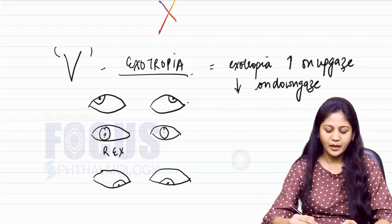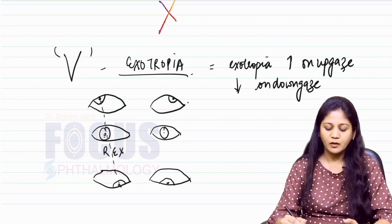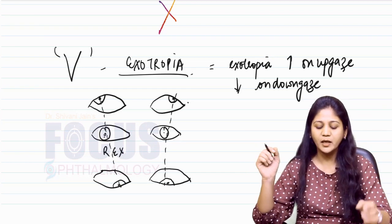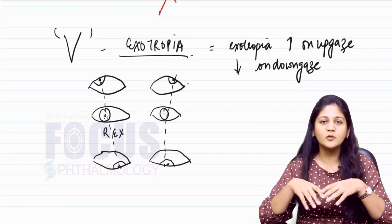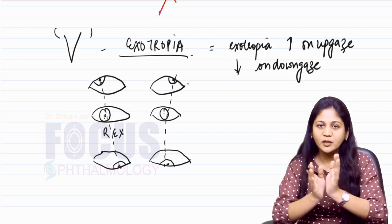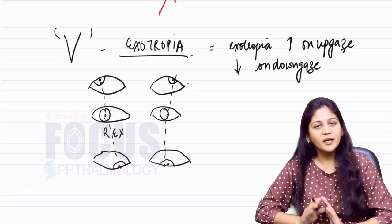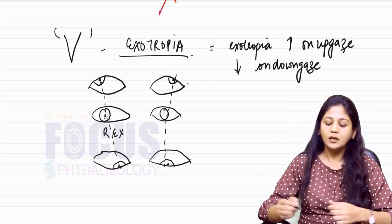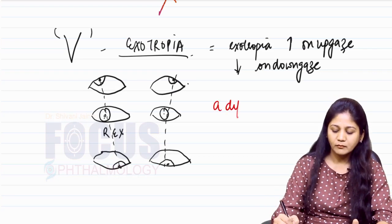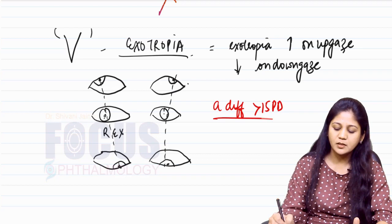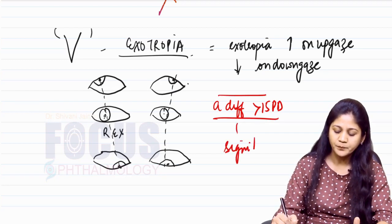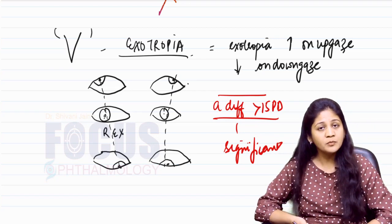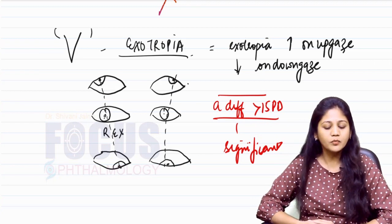Exotropia remains an exotropia — the amount increases when the patient looks up and decreases when the patient looks down. It does not become esotropic on down gaze. A difference of more than 15 prism diopters is considered significant. Only then will you label it as a V pattern.